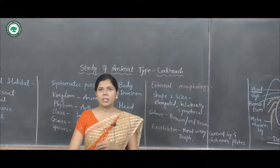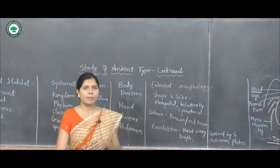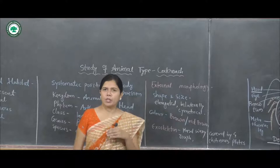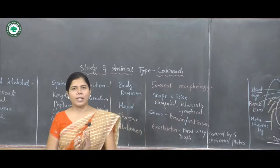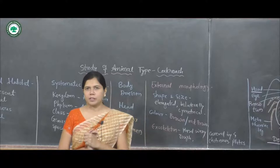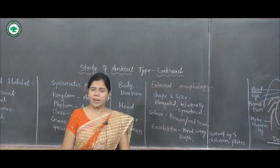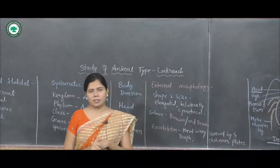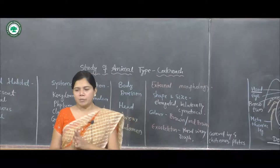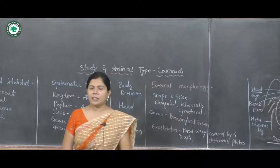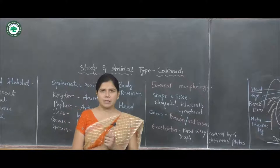The coloration of cockroach is brown or red-brown. The body is protected by a hard, waxy, tough exoskeleton which is non-living. This exoskeleton is formed by nitrogenous polysaccharide chitin, which provides strength, elasticity, and surface area for the attachment of muscles.